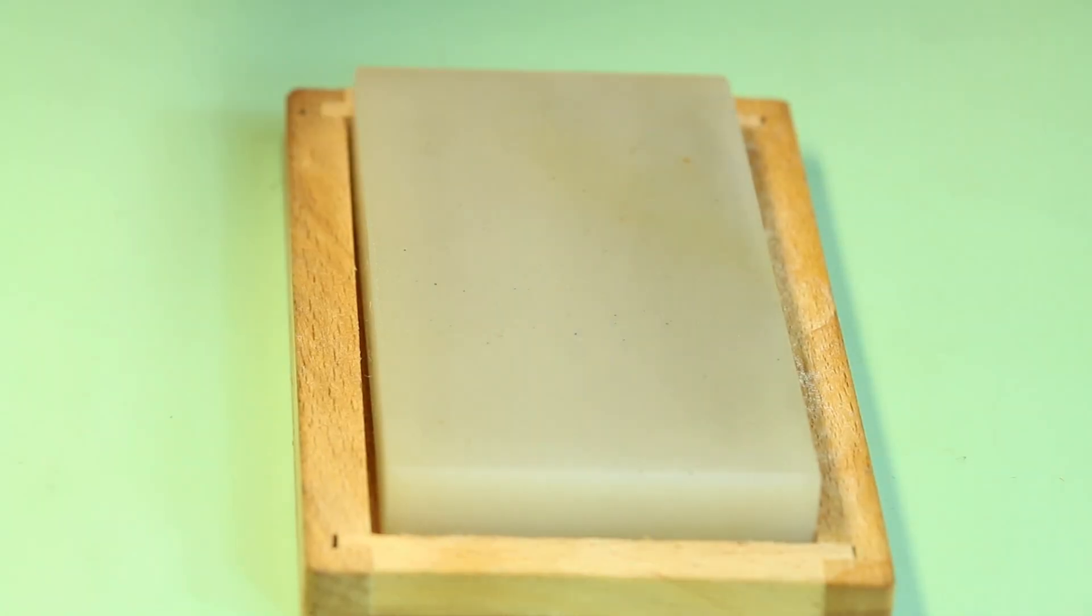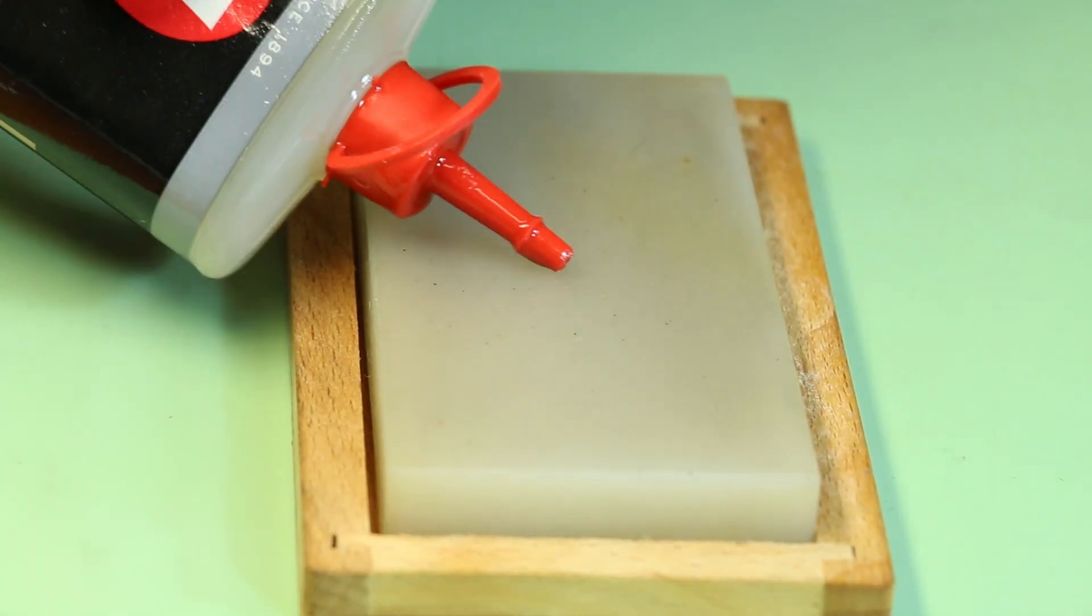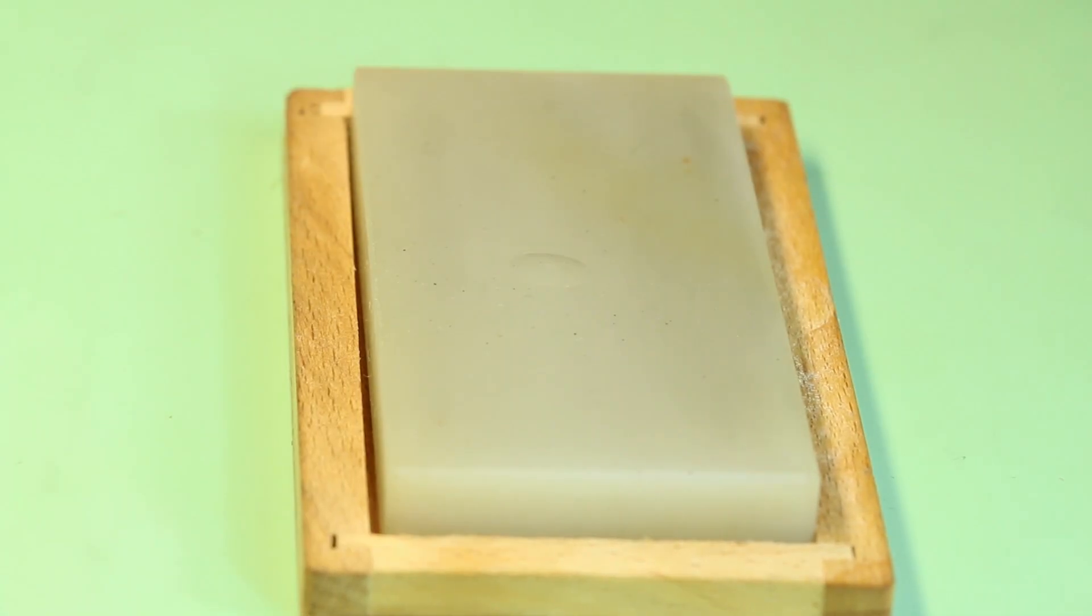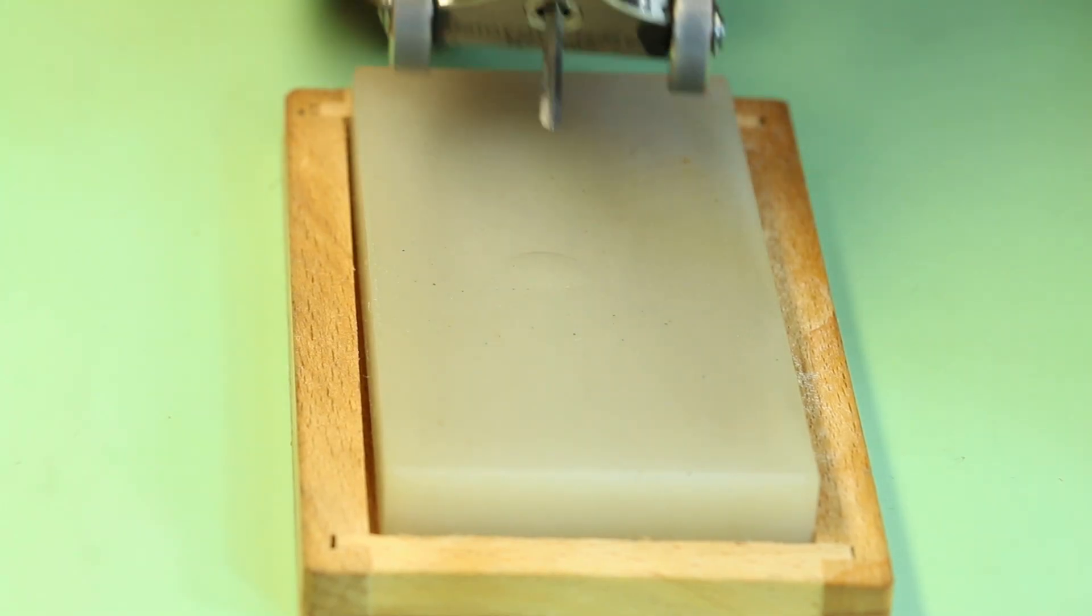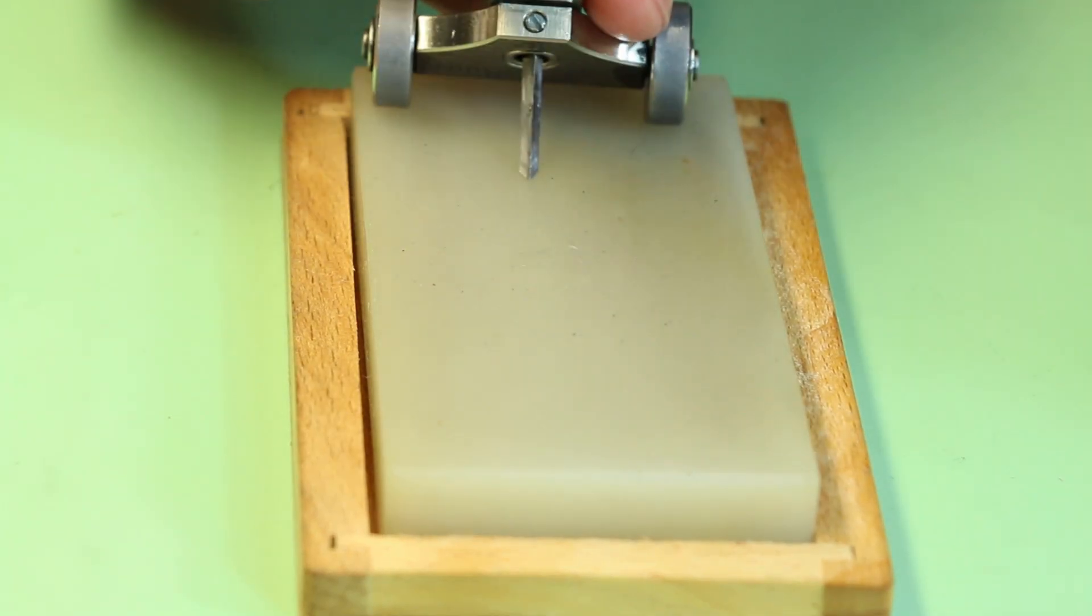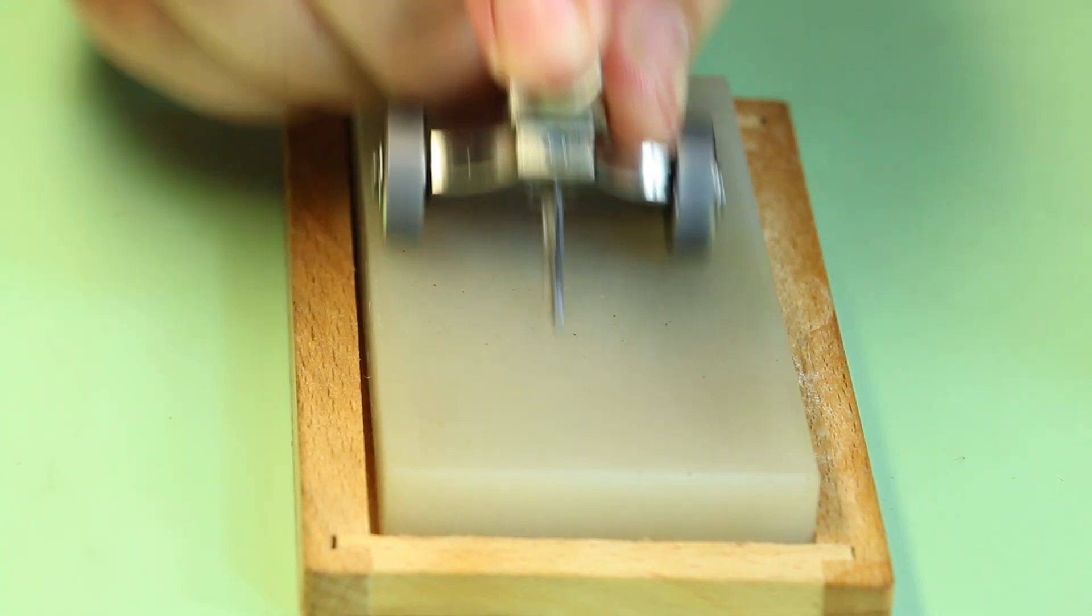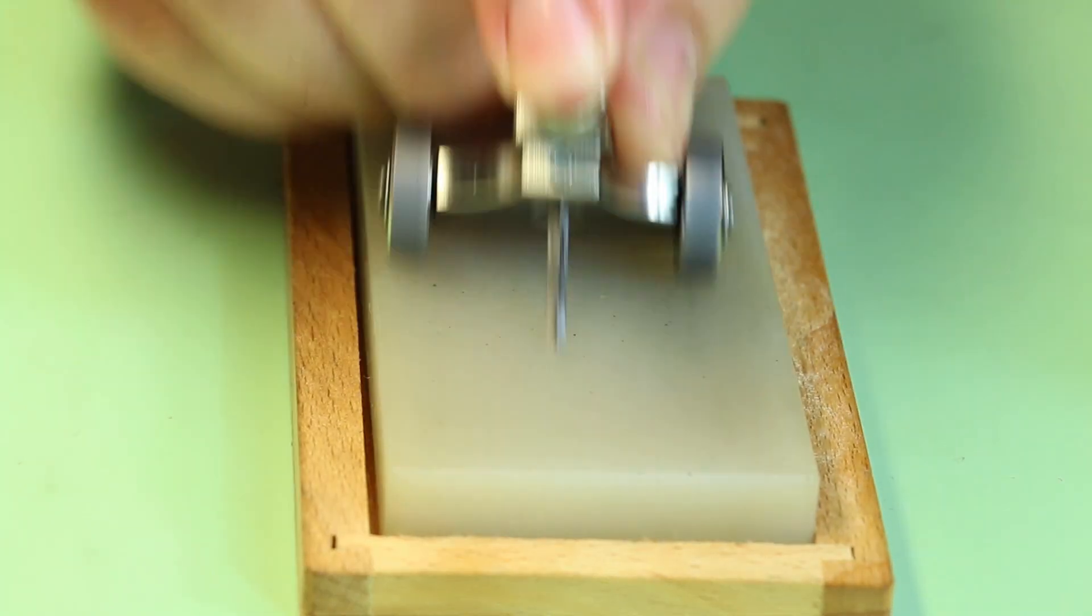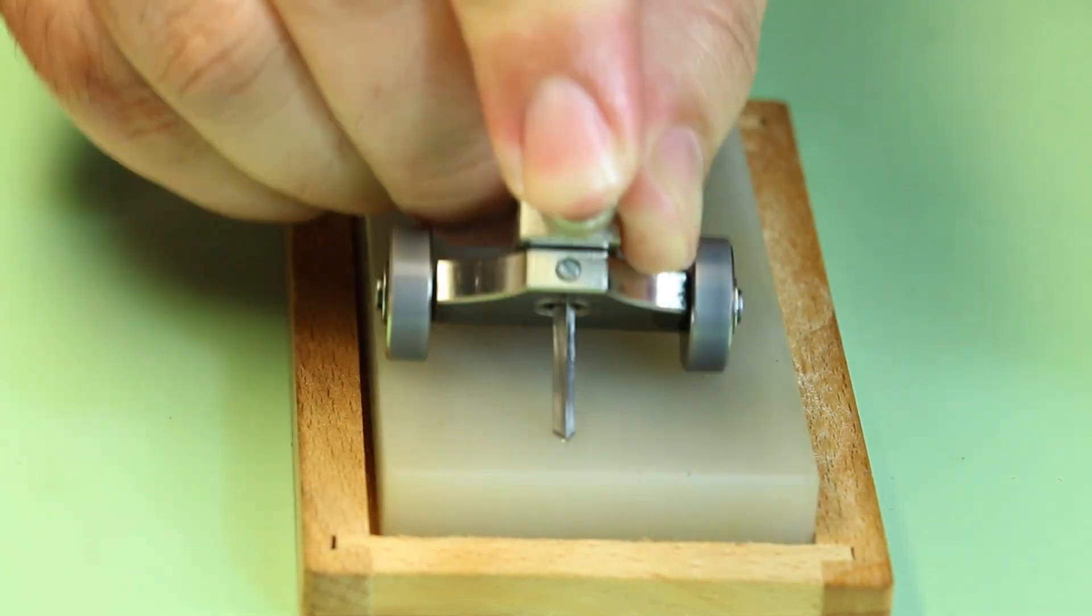So now what we're going to do is pull out our Arkansas stone. We're going to put a drop of oil, very faint, and we're just going to go back and forth like we did.